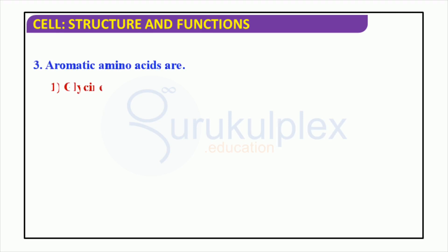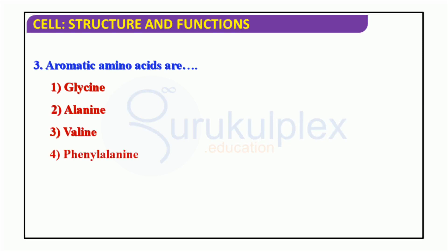Aromatic amino acids are a class of proteins with a distinct odor and are found in many types of foods and living organisms. Comprised of glycine, alanine, valine, and phenylalanine, these amino acids have unique roles in the body and can be essential in helping the body to create essential proteins.